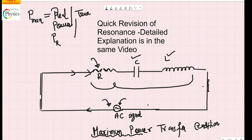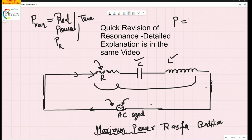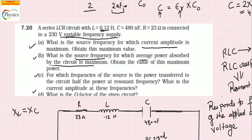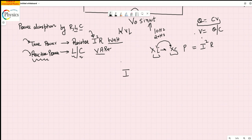The maximum power occurs at resonance and is given by I-rms squared multiplied by R. The condition is the same: XL equals XC. This is called the maximum power transfer condition — the circuit is completely resistive and no reactance plays any role. Part B is on maximum power transfer. The first step is to calculate I-rms.